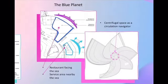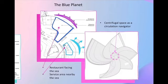Next Precedent Study is the Blue Planet Aquarium. The sea is located on the northeast of the building and the cafe and service rooms face the sea to get good view and easy seawater pumping respectively. Second, the spaces of the building are connected by a central gallery which acts as a centrifugal navigator that can ease the circulation within the building.